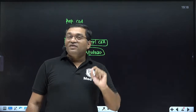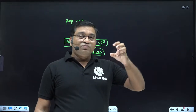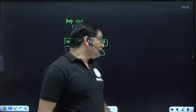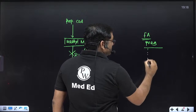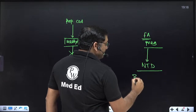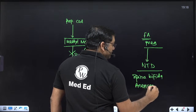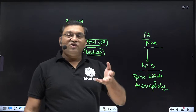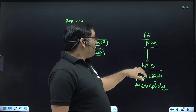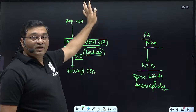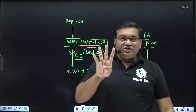B12 deficiency also causes inhibition of fatty acid synthesis, defective formation of sphingolipids and glycolipids, and defective myelin formation, which causes subacute combined degeneration of the spinal cord. Folic acid deficiency in pregnancy can cause neural tube defects — spina bifida and anencephaly. That's why folic acid supplementation (500 micrograms) is compulsory in pregnancy. The RDA of folic acid is 200 micrograms and for B12 it is 1–2 micrograms.